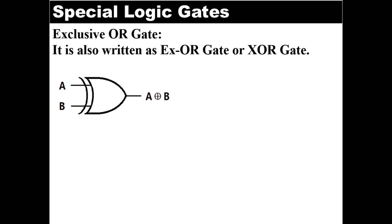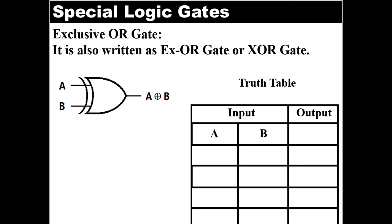Now let's see its truth table. This is the truth table where A and B are inputs with all possible combinations and Y is the output. When both inputs are 0, that is A=0 and B=0, then output Y is also 0. When A=0 and B=1, both inputs are unequal, so output will be 1. Same for A=1 and B=0 — inputs are unequal so output will be 1. And for the last combination where A=1 and B=1, both inputs are equal so output Y will be 0. In this way XOR gate performs the inequality function.